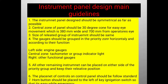Second, the central zone of the panel should be within a 30-degree cone for each eye movement, which is 380 millimeters wide and 700 millimeters from the operator's eyes. Third, the size of related groups of instruments should be the same — gauges like temperature gauges, pressure gauges, and accelerometer should be grouped separately.